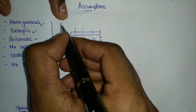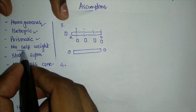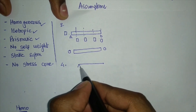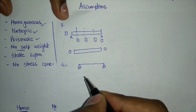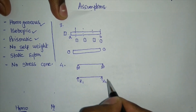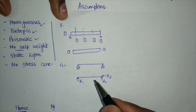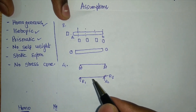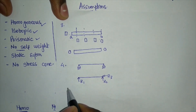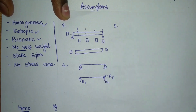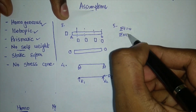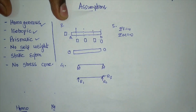The fourth property is no self-weight. As discussed in our previous video, when drawing the free body diagram of a beam with a roller support and a pin support, we only note the reactions R1, R2, and R3. We do not consider the weight of the beam unless explicitly specified in the problem. The fifth property is static equilibrium: the equations ΣF = 0 and ΣM = 0 hold throughout our study of solid mechanics.